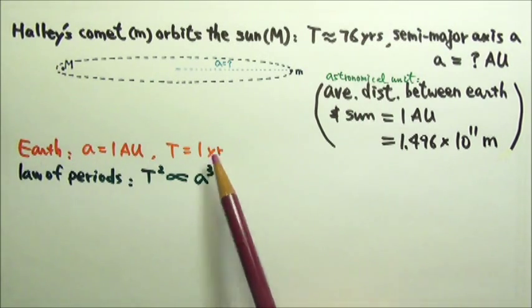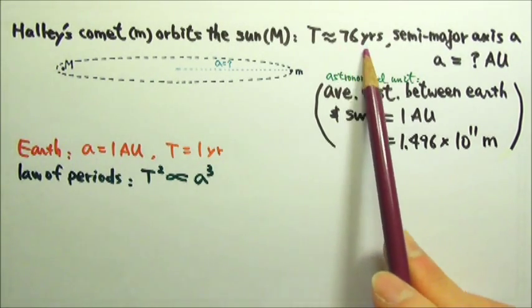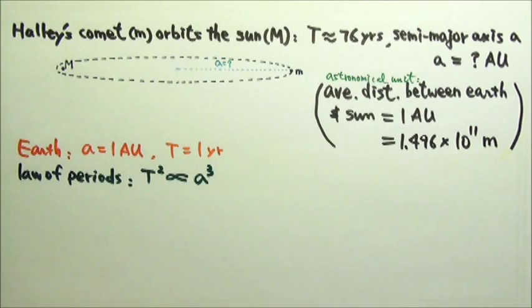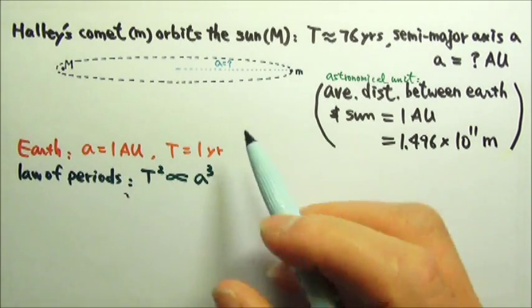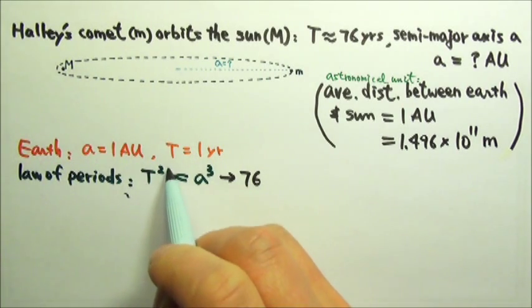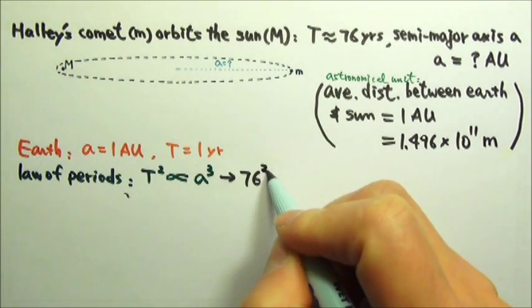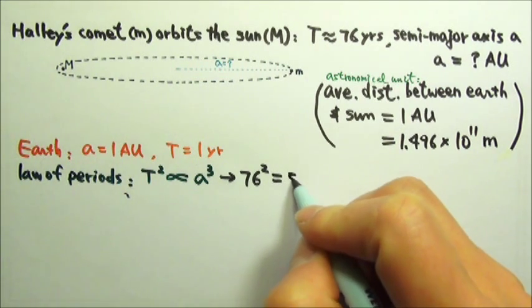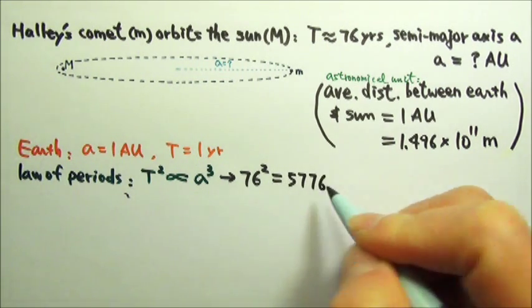Compared to the Earth, Halley's Comet has 76 times the period. So the period changes by a factor of 76, and the period has to be squared. So it's 76 squared, which is 5,776.